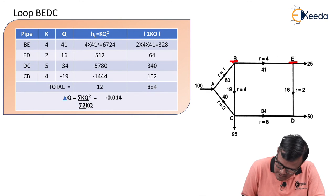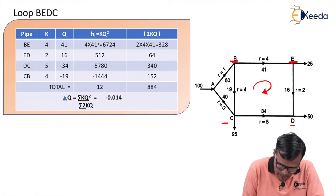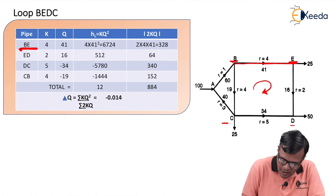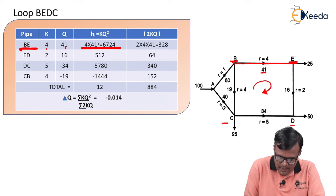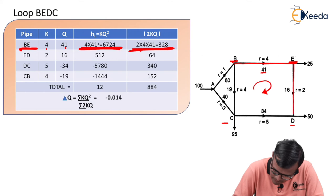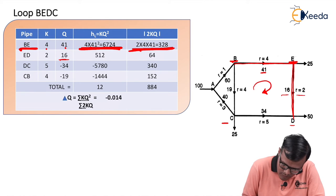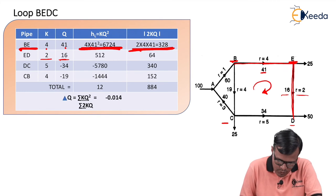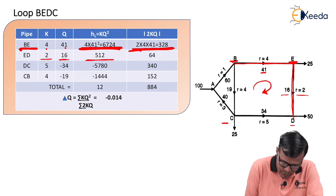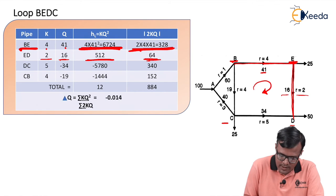For loop B-E-D-C, we consider the clockwise direction as positive. For pipe B-E, R = 4 and discharge = 41. So K×Q² = 4×41² = 6724, and 2×K×Q = 2×4×41 = 328. For pipe E-D, the discharge value is 16 and R (K) = 2. So K×Q² = 2×16² = 512, and 2×K×Q = 2×2×16 = 64.